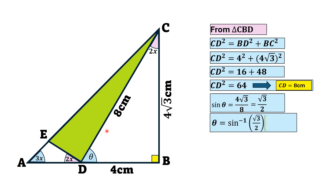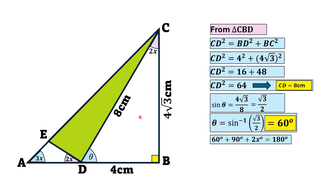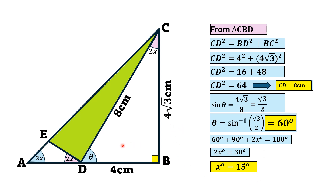Taking the inverse, theta = sin⁻¹(√3/2), so theta equals 60 degrees. Using the sum of interior angles of a triangle being 180 degrees, we get 2x = 30, and therefore x = 15 degrees.